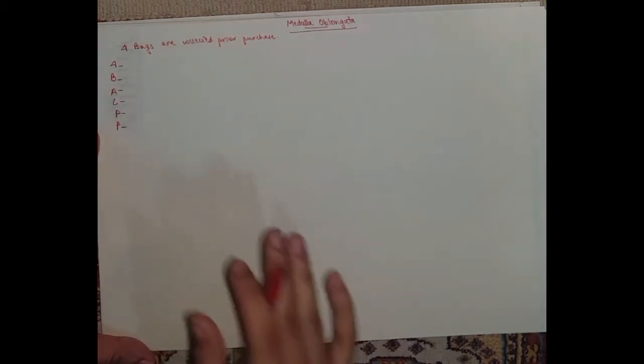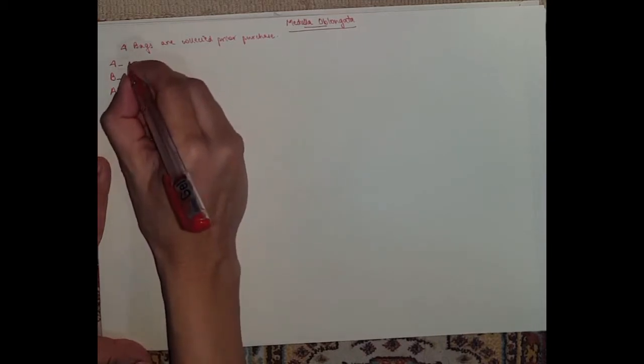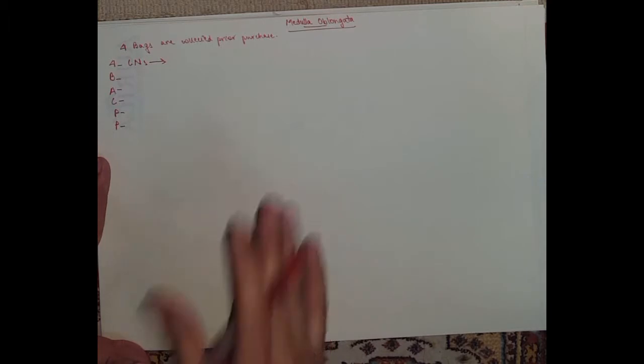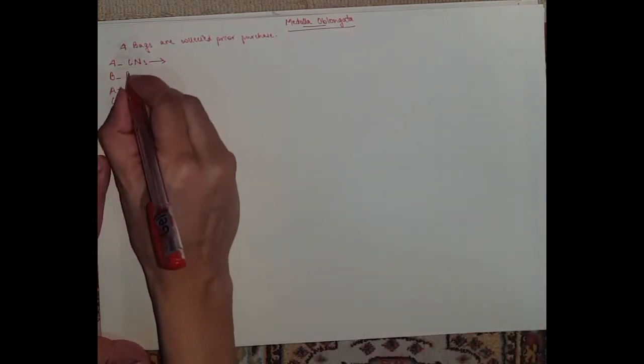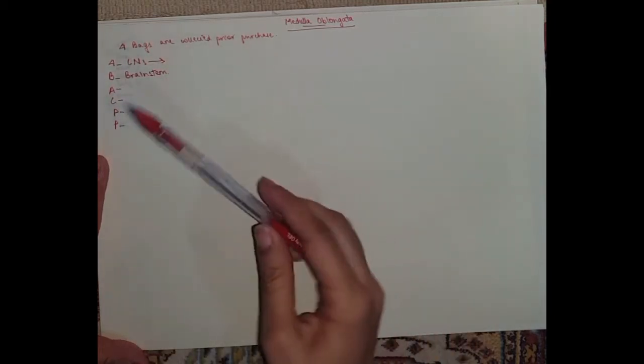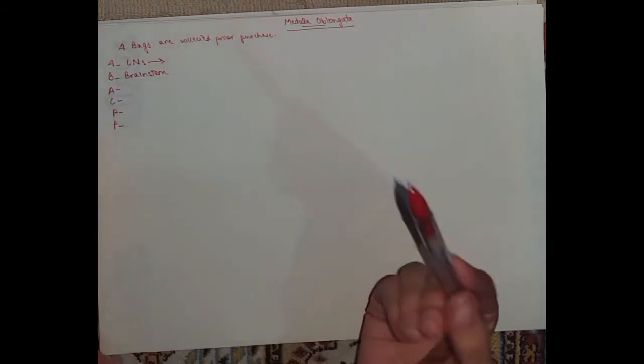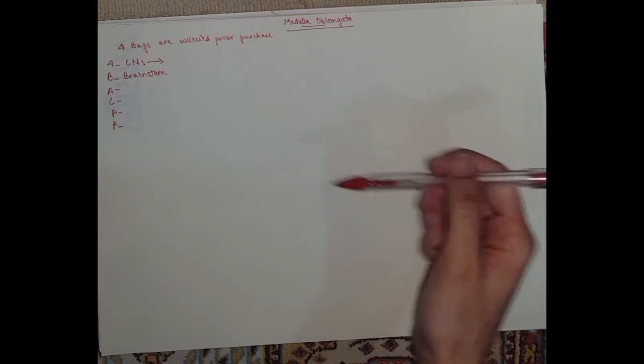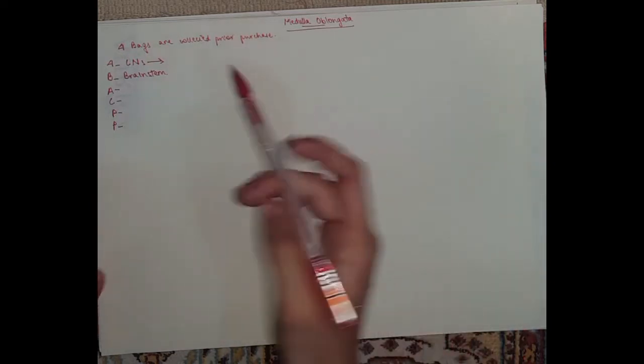So the four here stands for the four cranial nerves that terminate at the medulla oblongata. The B stands for brainstem. It's important because the brainstem is the midbrain, the pons, and then the medulla. So you need to know that the medulla is the last part of the brainstem.